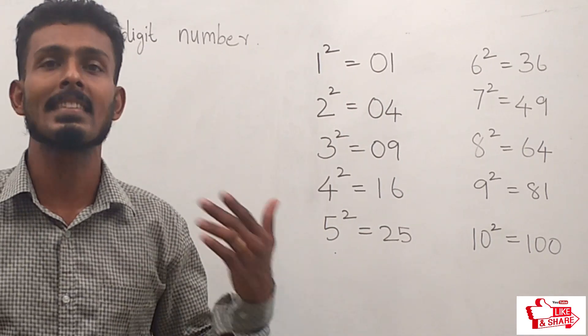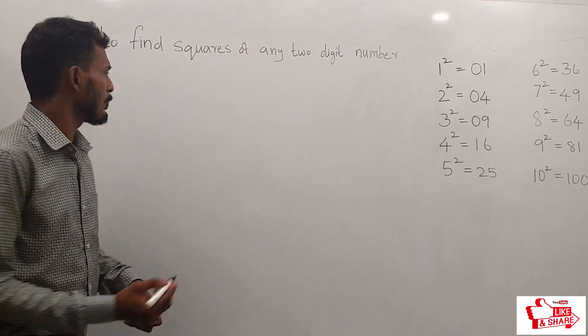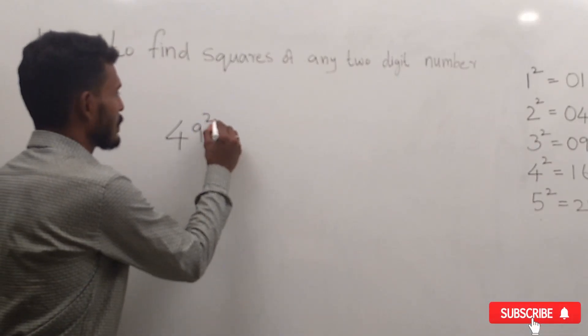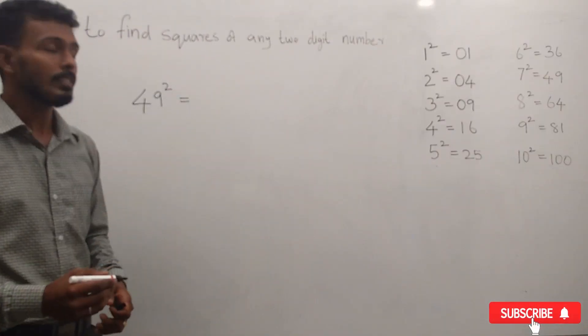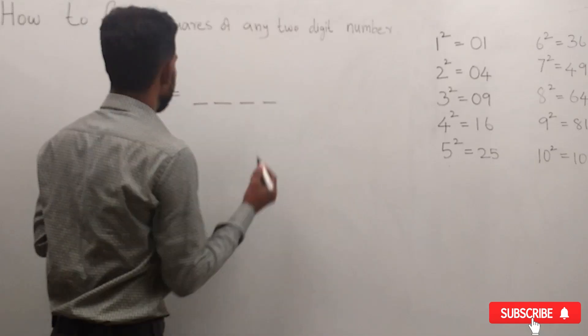Without further delay, let's get started. For example, we have to find the square of 49. What is 49²? We have to make 4 blanks, that is, 4 blanks.